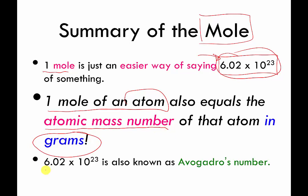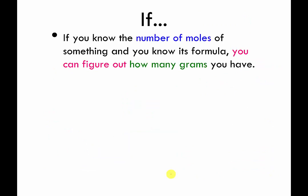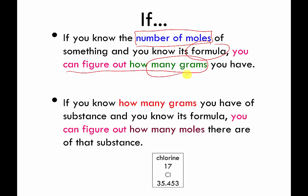This number is sometimes known as Avogadro's number or Avogadro's constant. There are two big bullet points here that are important enough to show up over and over again. If you know the number of moles of something you have and you know its chemical formula, you can figure out how much it weighs — how many grams of it you have. And you can do this in reverse: if you know how many grams of something you have and you know its formula, you can figure out how many moles of it you have. You need the periodic table to do this.